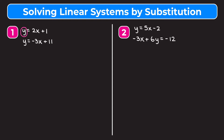The first equation tells us that y is equal to 2x plus 1. Since we're trying to find an xy pair that satisfies both equations, y must also equal 2x plus 1 in the second equation. So we substitute that expression into our second equation: 2x plus 1 equals negative 3x plus 11. Now we have one equation with one variable and can solve for x.